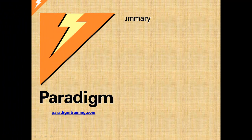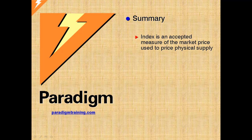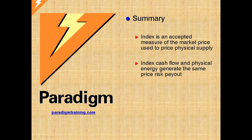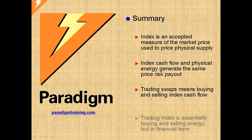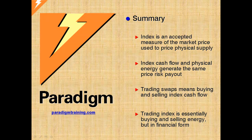In summary, an energy price index is a fair representation of the market price of a commodity that is widely accepted among market participants. Cash flow amounts are calculated from index prices, and these cash flows will have risk profiles virtually identical to physical energy. Index cash flow can be bought and sold just like and right alongside physical trades. In fact, trading index cash flow is trading energy, only in financial form.